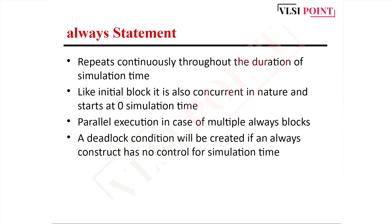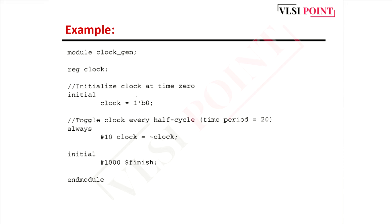The always statement starts at zero simulation time. In case of multiple always blocks, parallel execution occurs. There can be a deadlock condition if there is no control over simulation time, so we need to use the always statement wisely and provide a sensitivity list. In this example, both initial and always blocks are used — always with #10 clock = ~clock, so the clock is negated every 10 time units until $finish occurs.